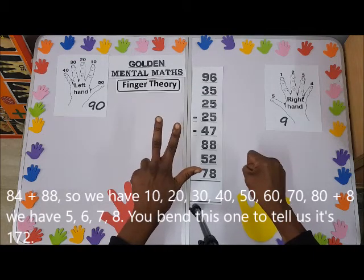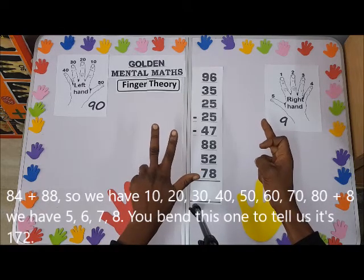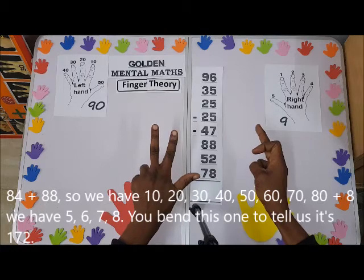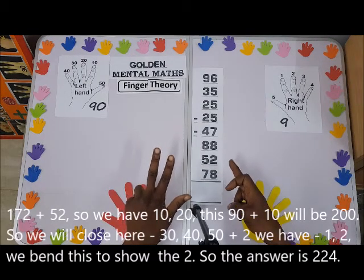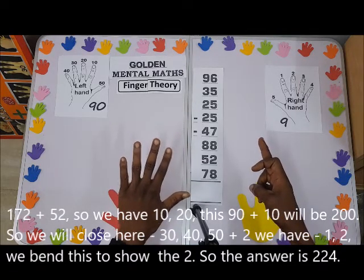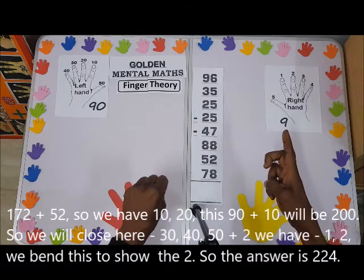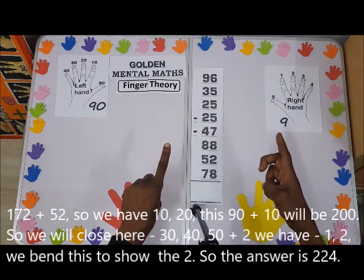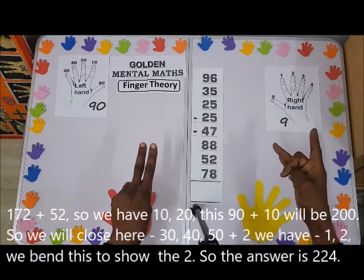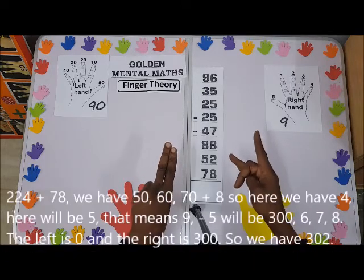That gives us 172. 172 plus 52: we have 10, 20 — this 90 plus 10 will be 200. You close here. So 30, 40, 50, plus 2. You bend this finger to show 2: that is 224.